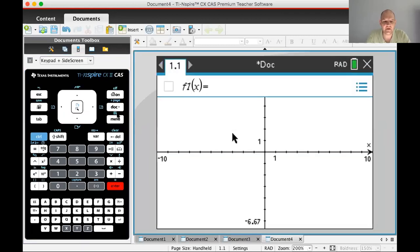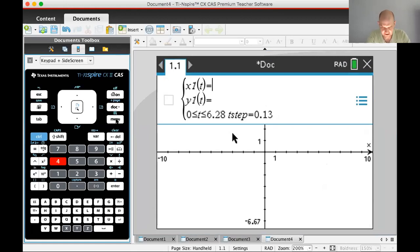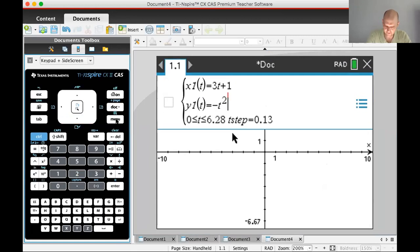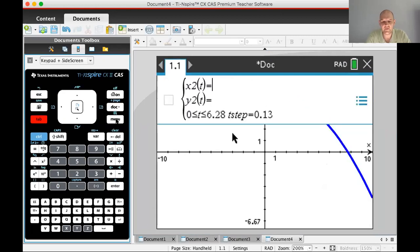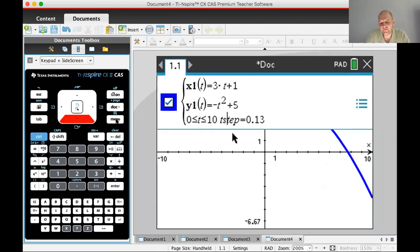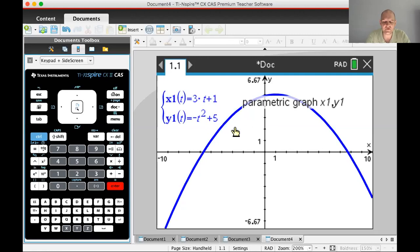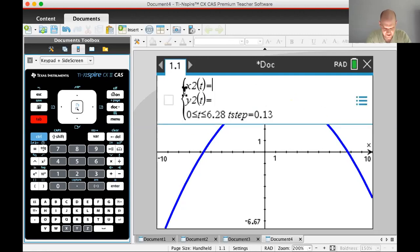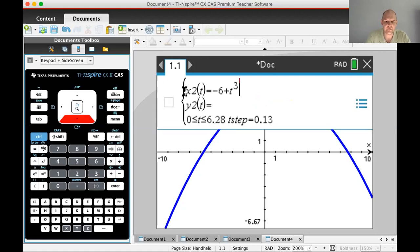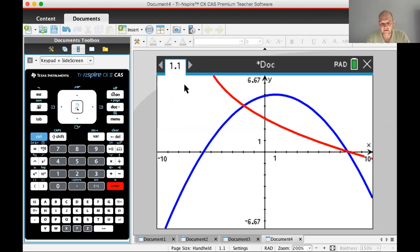Go to the graph page, menu 3-4, and punch these in: 3t + 1 and -t² + 5. Let's set the window to -10 to 10. We get our downward-facing quadratic, which is what I was expecting. The next one is -6 + t³ and 12 - 5t.